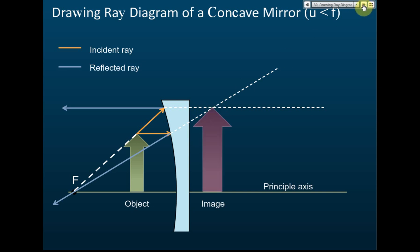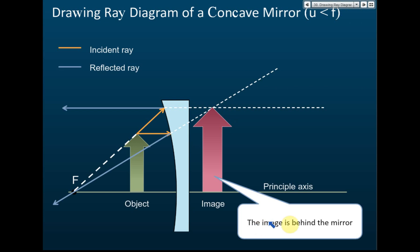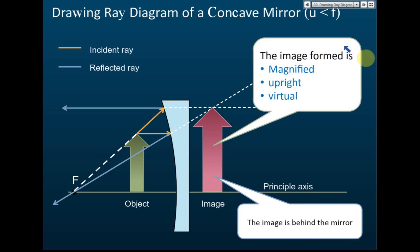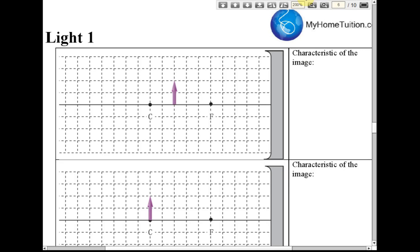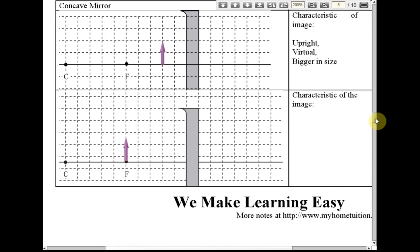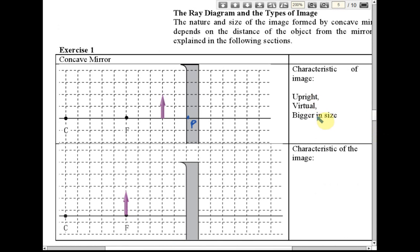The point where the extended lines intercept each other is the position of the image. From here we can see that this image is bigger than the object, and since the image is behind the mirror, it is virtual. So the image formed is magnified, upright, and virtual.